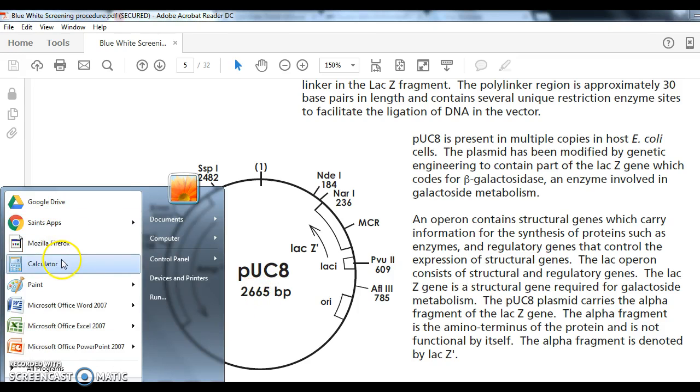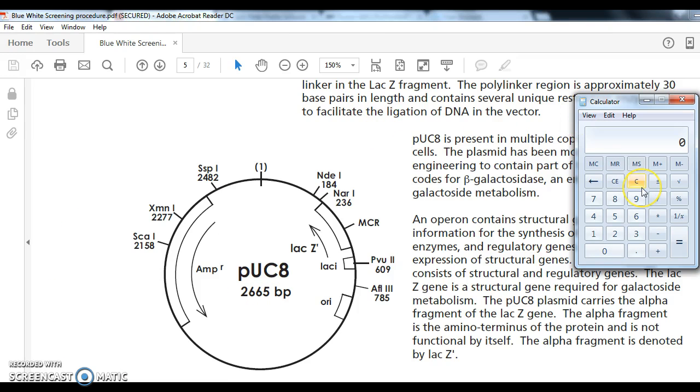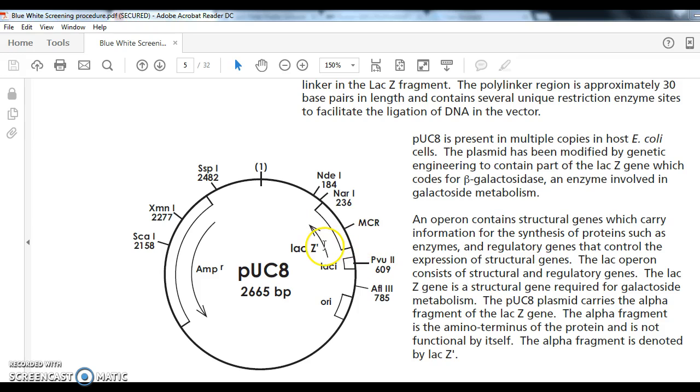So, just to give you a quick example of plasmid restriction maps, 2158 minus 785 would be 1373. If we took 1373 from 2665, we know that one cut here would make 1373 base pairs and the other strand would be 1292. So that's how we do restriction mapping.